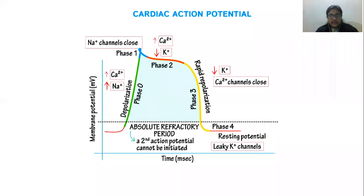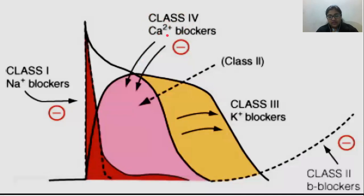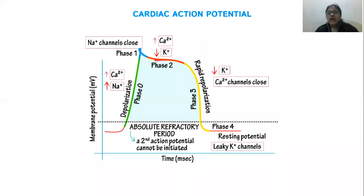Class 4 covers calcium channel blockers. Calcium is being blocked here — just imagine calcium is being blocked. What will happen? Will it go that high, will it go that steep? Because in our first lesson I explained why we have this plateau: potassium is getting out, calcium is getting inside, and the amount of ions getting in and getting out is being stabilized, which is why we have this plateau.